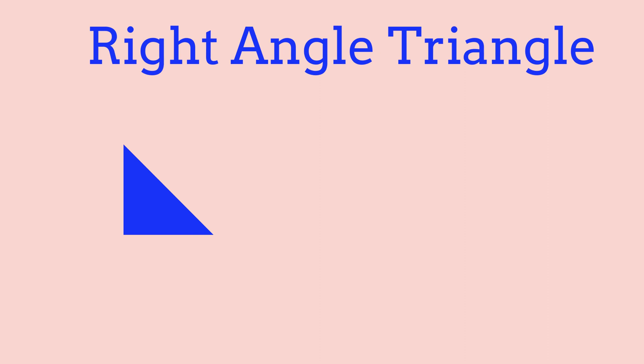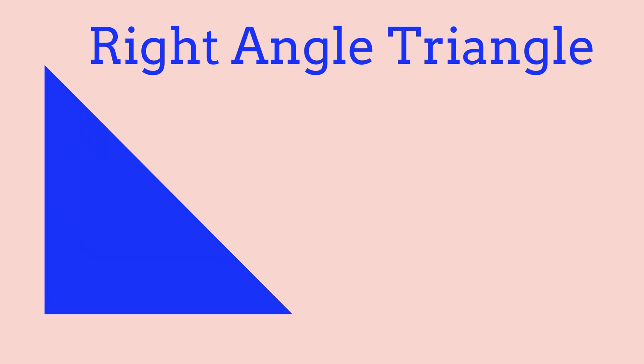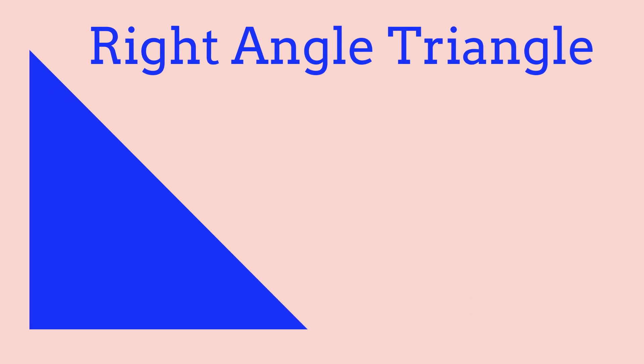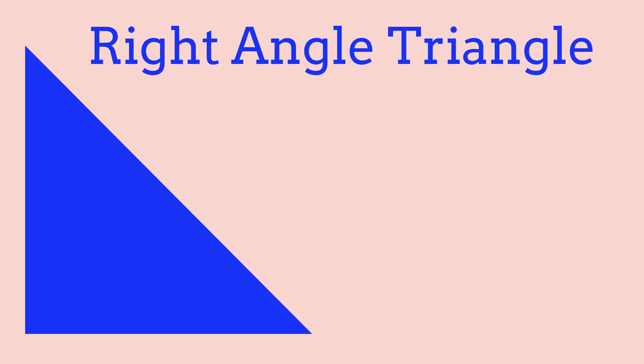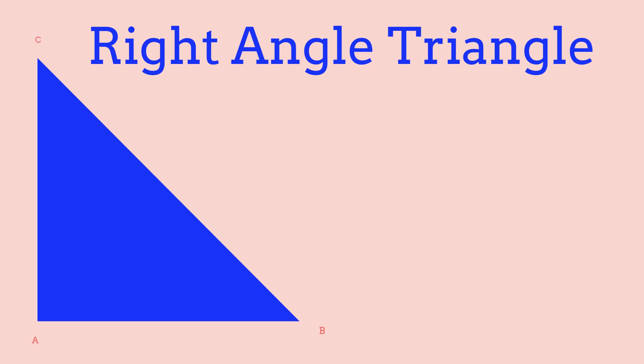Let's start off with a right angle triangle. Just to refresh our minds, a right angle triangle is a triangle that has a 90 degree angle. I'll put how a right angle triangle looks like on the screen, and I'll also label the points. We're going to label the points A, B, and C.